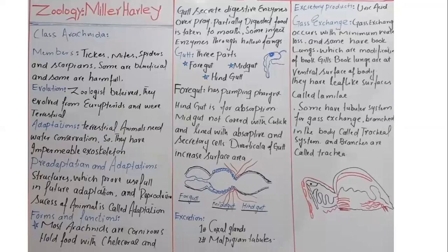If we talk about gaseous exchange, the gaseous exchange will occur in book lungs if the organism is terrestrial. If the organism is aquatic, it will occur through gills. The book lungs are present on the ventral side and contain leaf-like structures called lamellae. Some members have a tracheal system. Trachea is actually a tube with openings called spiracles that help with gaseous exchange.